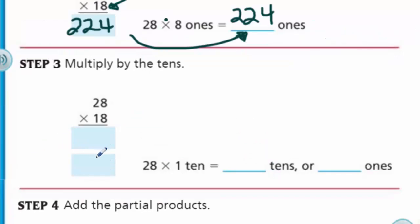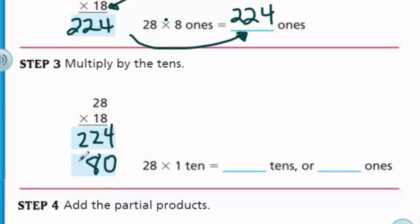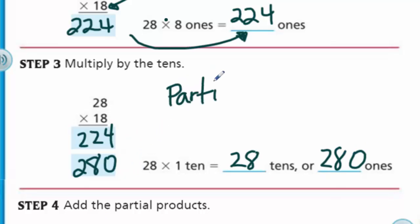Step 3 says multiply by the tens. We go ahead and put in our 224 ones. But now when we come down to the tens place, we need to put in a zero — a placeholder — because we want to make sure our digits are aligned with our tens. We're not multiplying by the ones column; that's one difference from yesterday. We didn't have to do that before, but today on this lesson we put a zero in as a placeholder. Then 1 times 8 is 8, and 2 times 1 is 2, giving us 28 times 10.